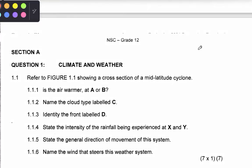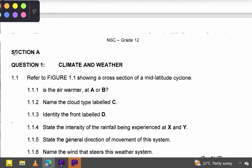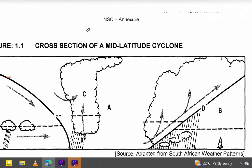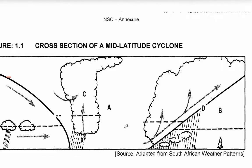Let's jump into our revision. Section A, question one: committee weather. Question 1.1 says refer to figure 1.1 showing a cross-section of a mid-latitude cyclone. So we have our figure 1.1 showing a cross-section of a mid-latitude cyclone. You can clearly see the physical features of a mid-latitude cyclone.